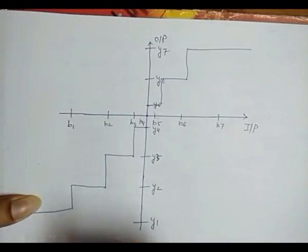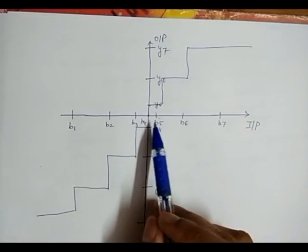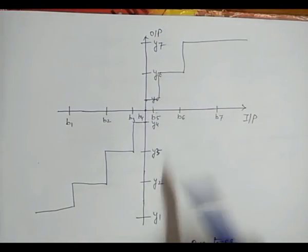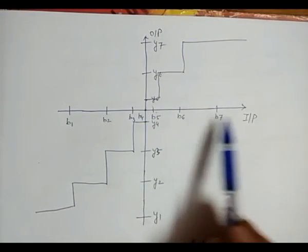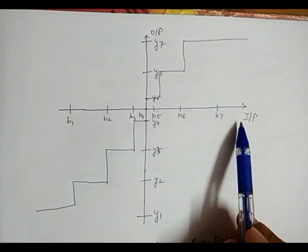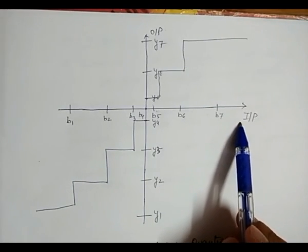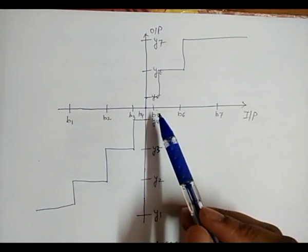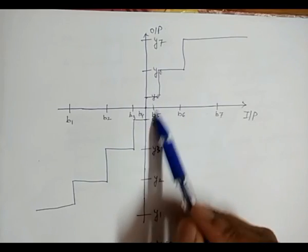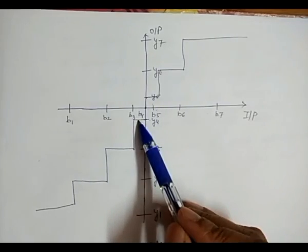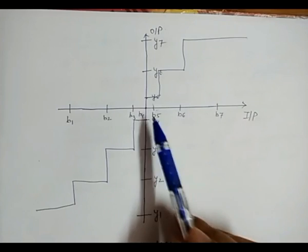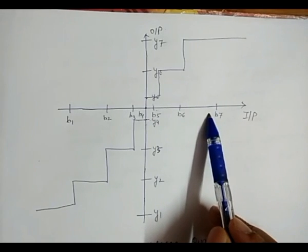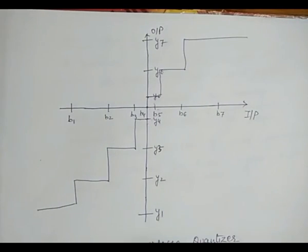So, we can say that in the non-uniform quantizer, the step size between the intervals is not constant and not equal. In the case of the non-uniform quantizer, the intervals which are nearer to the origin have a smaller step size compared to the intervals which are away from the origin. This is the summary of the non-uniform mid-rise quantizer.